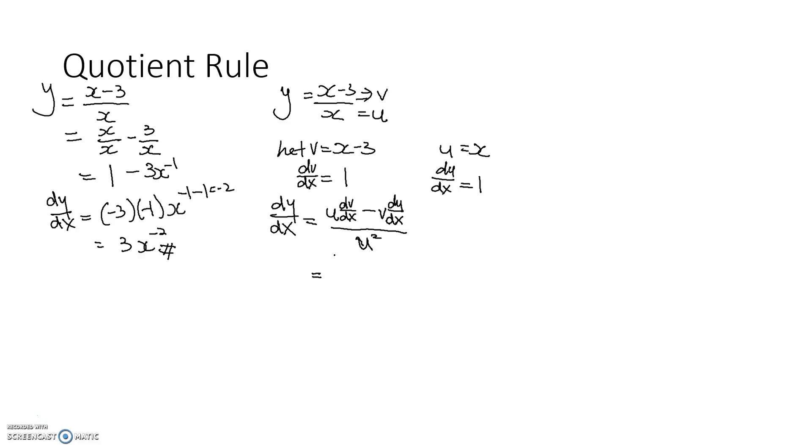So if you put it in, u is x, dv dx is 1, minus v, x minus 3, and du dx is 1, over x squared. So this is, just to revise, this is the quotient rule over here, dy dx equals to u, which is the denominator term, which is x over here, multiplied by dv dx, differential of v with respect to x over here, minus v du dx over u squared.